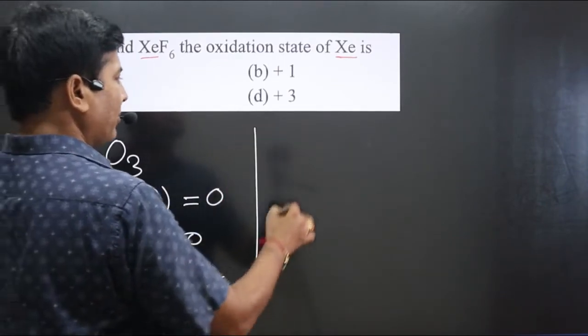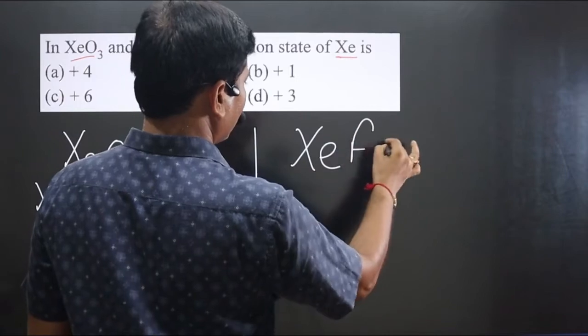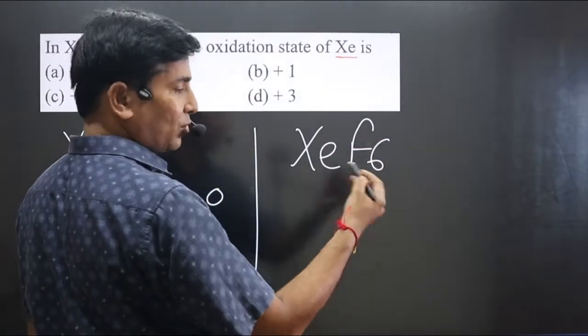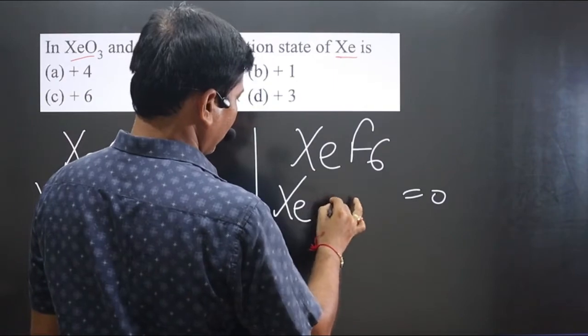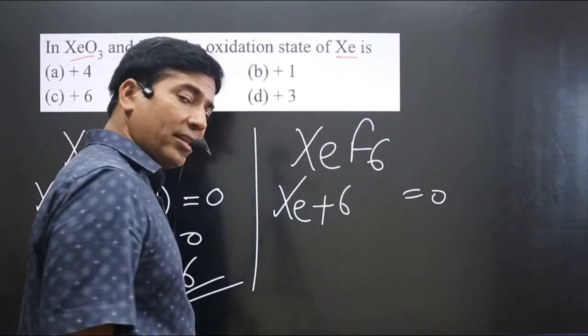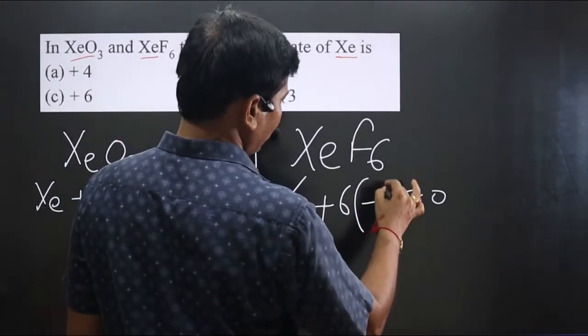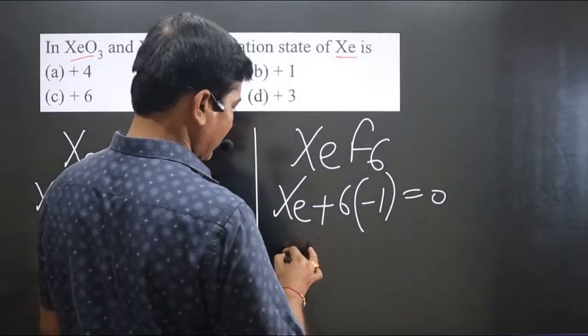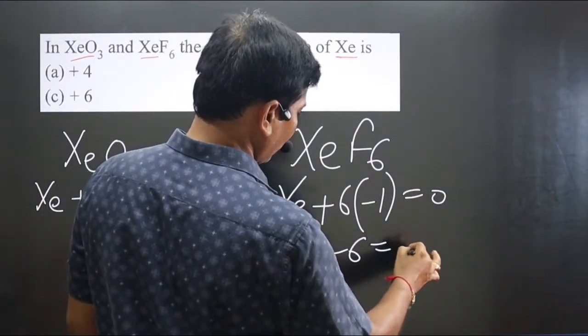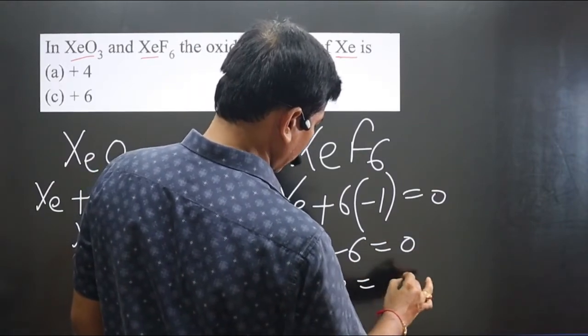Second compound we have XeF₆. It is also a neutral compound, equal to zero. Xenon and how many fluorine are there? Six fluoride, each fluoride is minus one, highly electronegative elements. Xenon minus six equals zero, then xenon is equal to plus six.